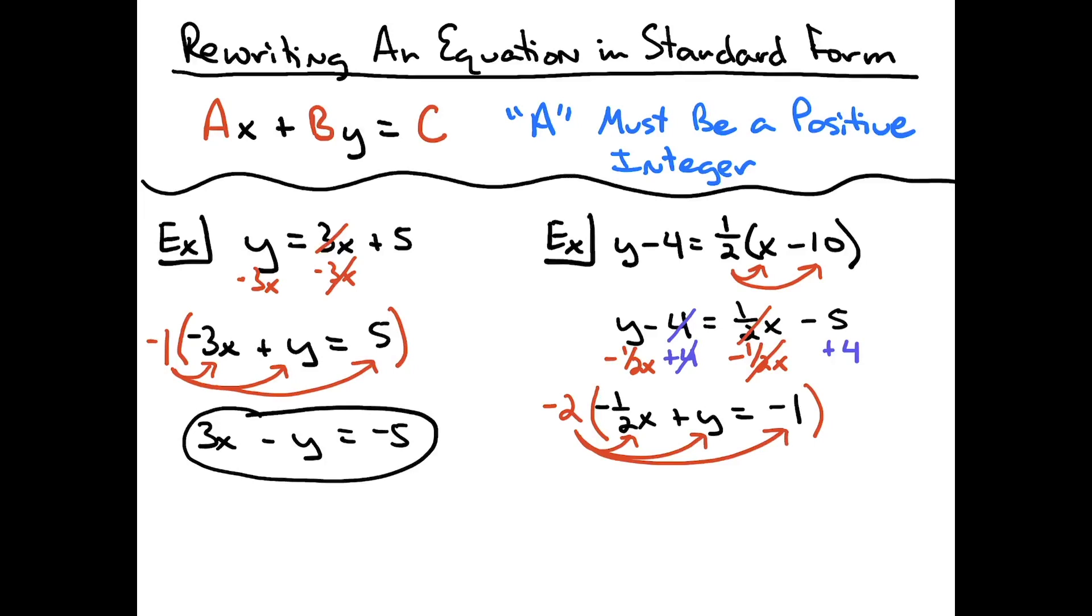So then when I do that, I end up with a final answer of x minus 2y is equal to 2 for standard form.